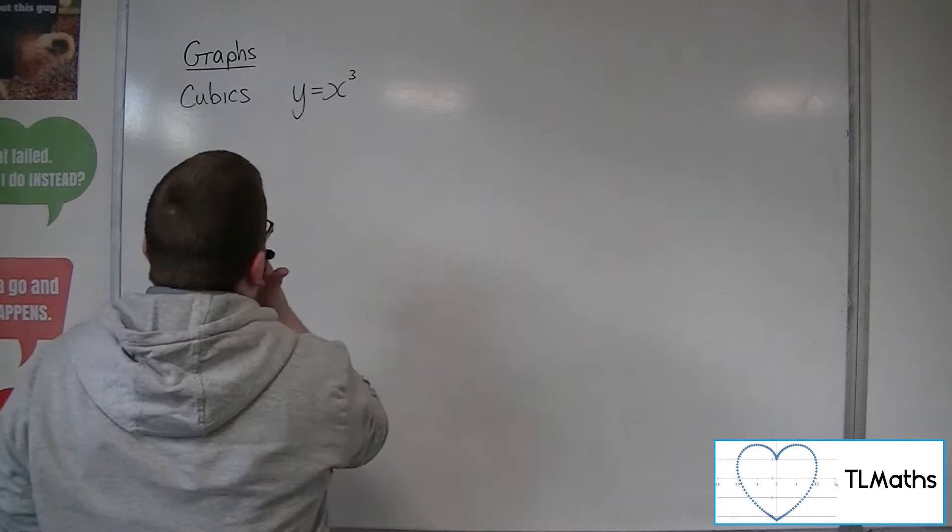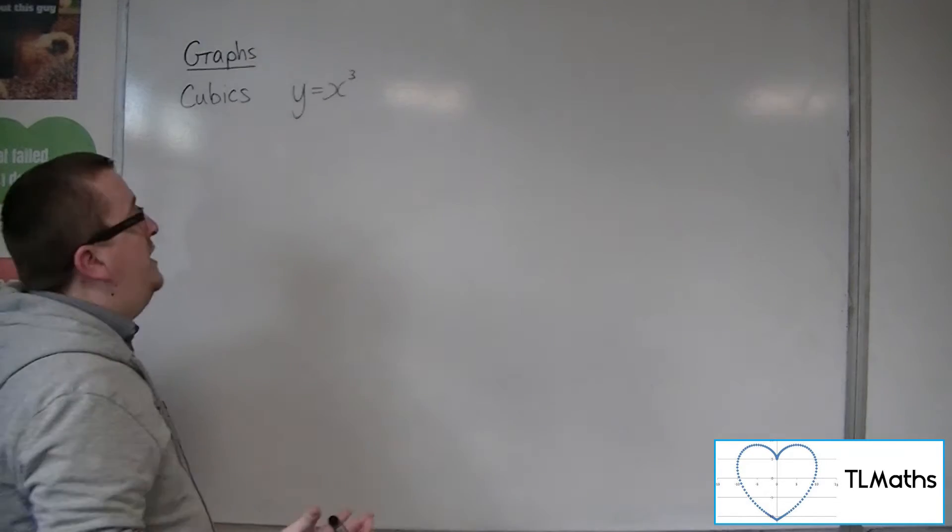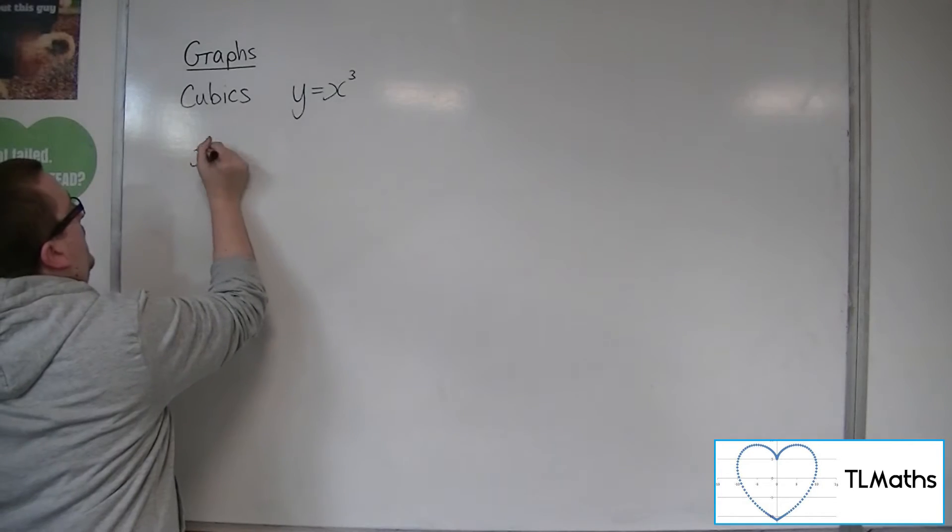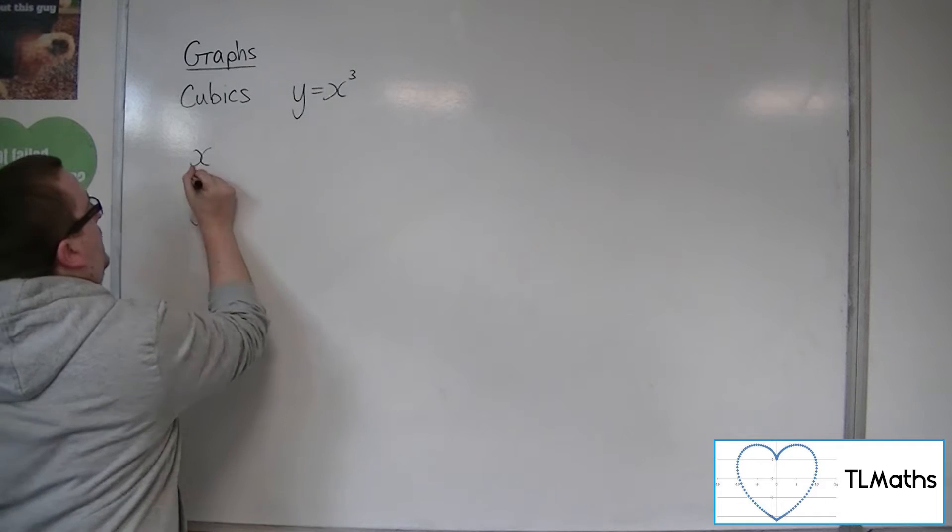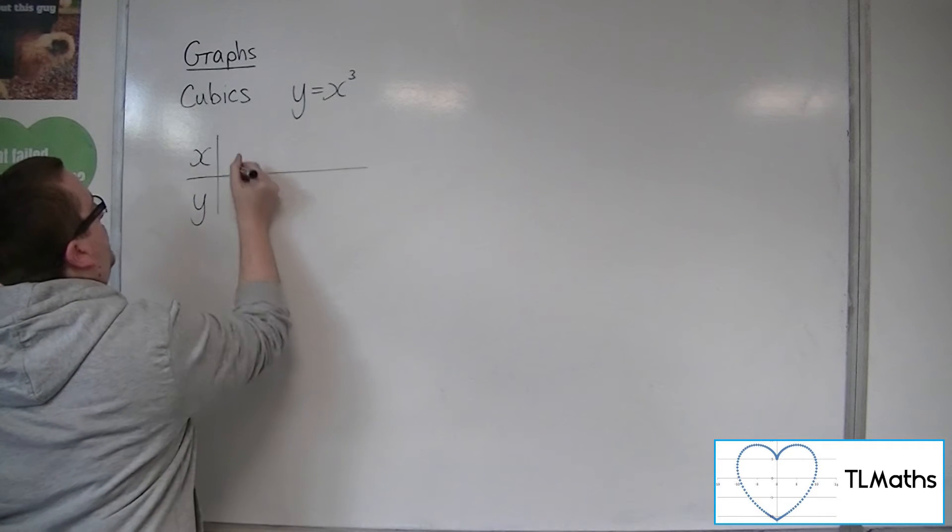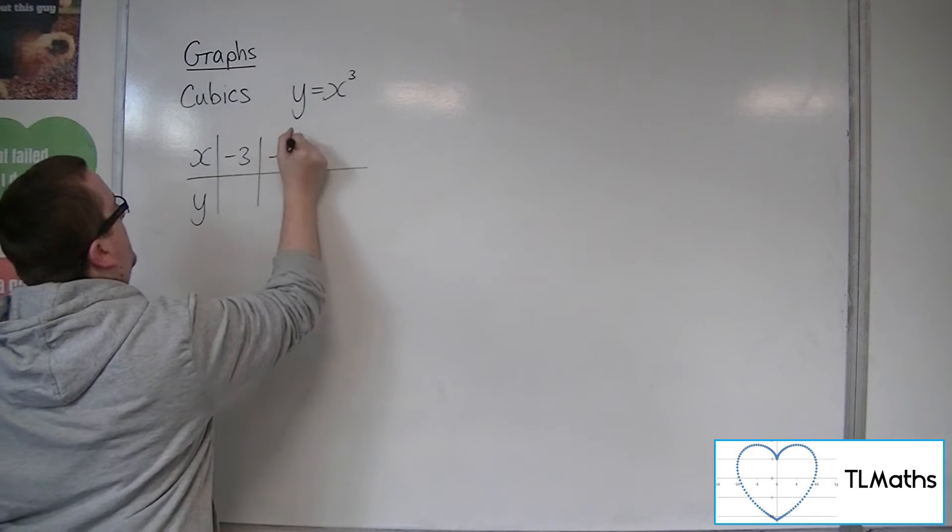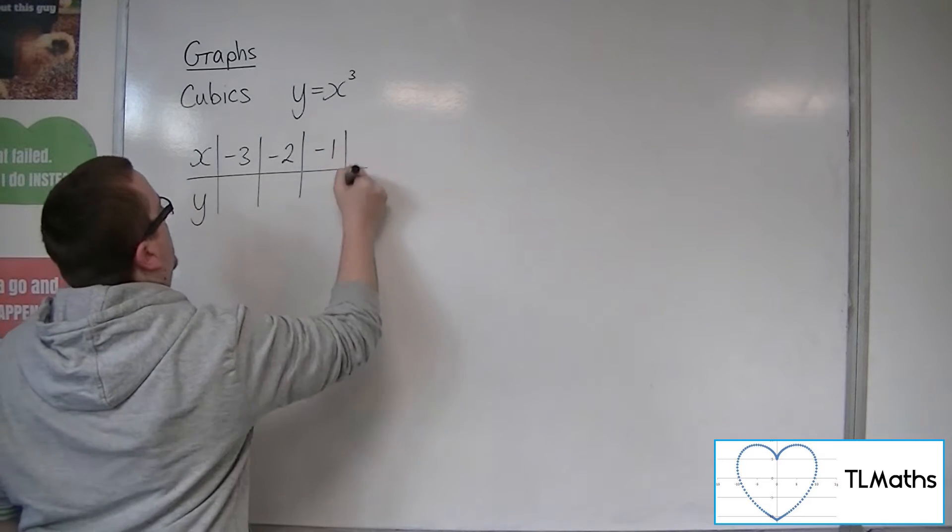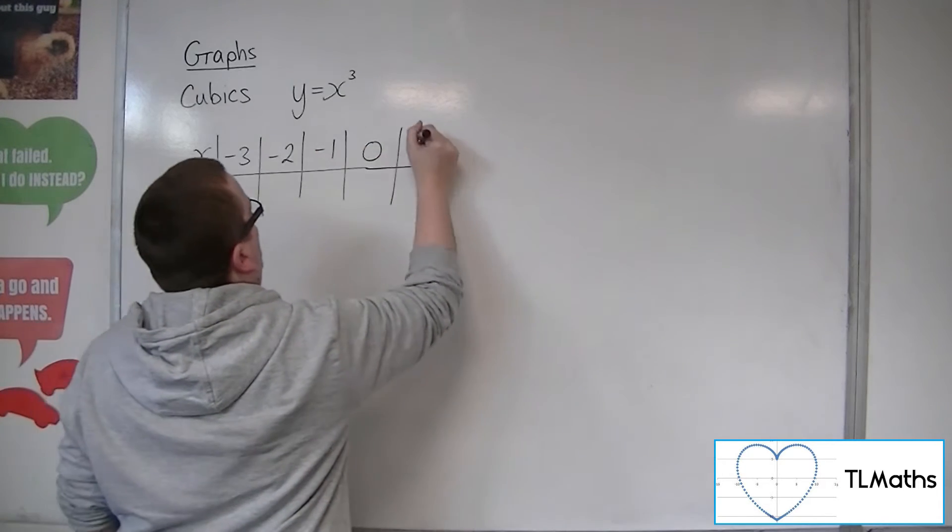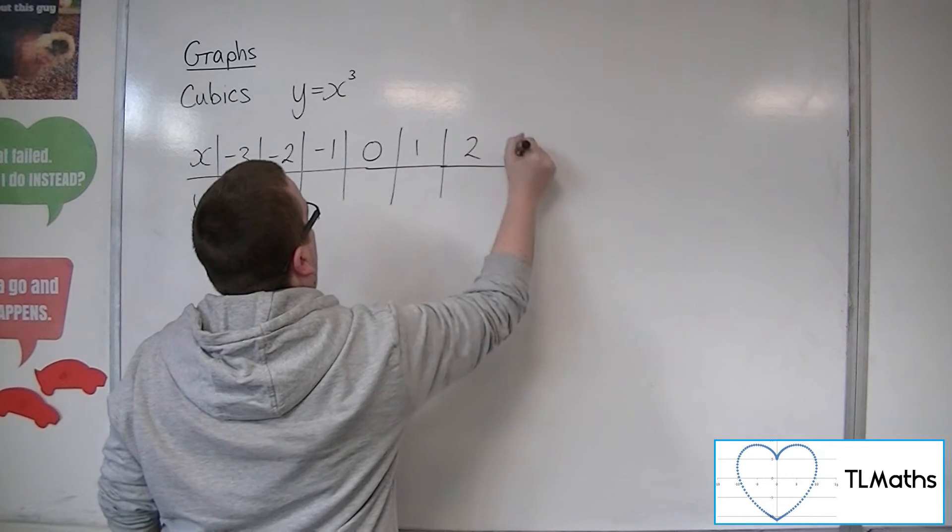Now, if you wanted to really know what that looked like, then you could plot a few points. You could try some x's and get some y's. So if we had minus 3, minus 2, minus 1, 0, 1, 2, and 3.